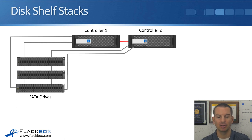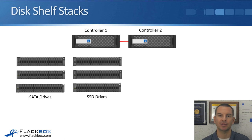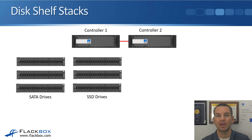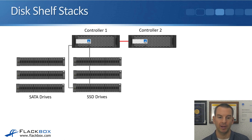Controller two also has a multi-path HA connection going to the stack. For our example, let's say we've got another stack of disk shelves — a stack of SSD drives. Best practice is to have different types of drives in different stacks, so this SSD stack will have separate connections using separate ports on the back of our controllers. With a spare SAS port on controller one, it connects to the top shelf in the SSD stack, we daisy chain the SAS cables down, and we have multi-path HA to that second stack as well — from both controller one and controller two.